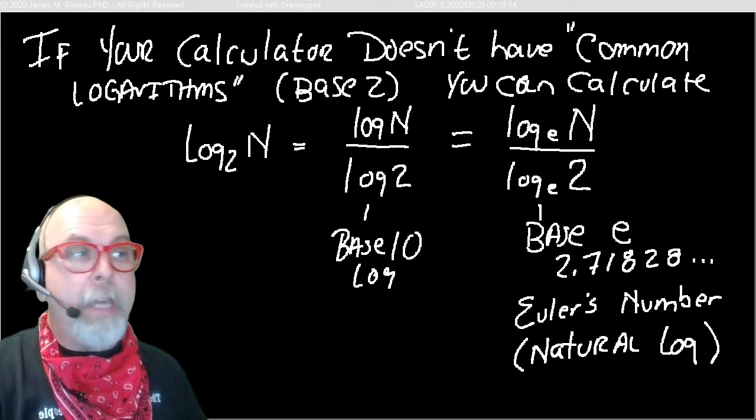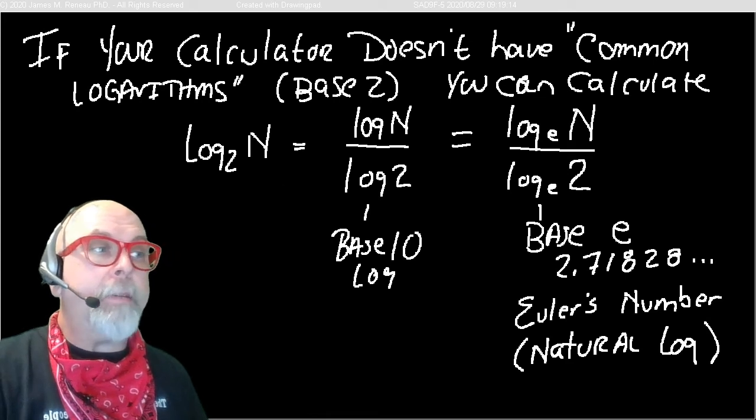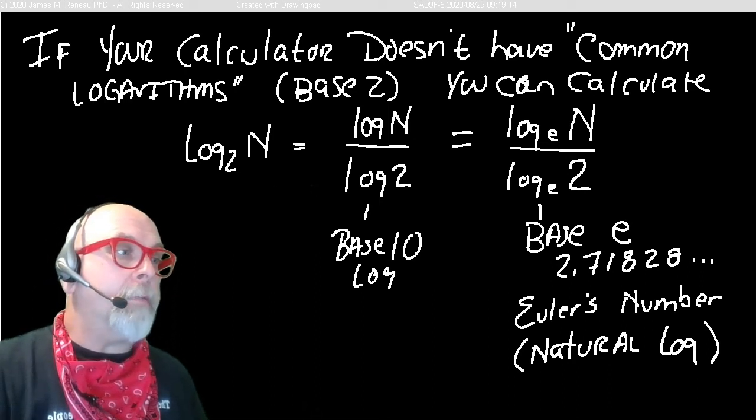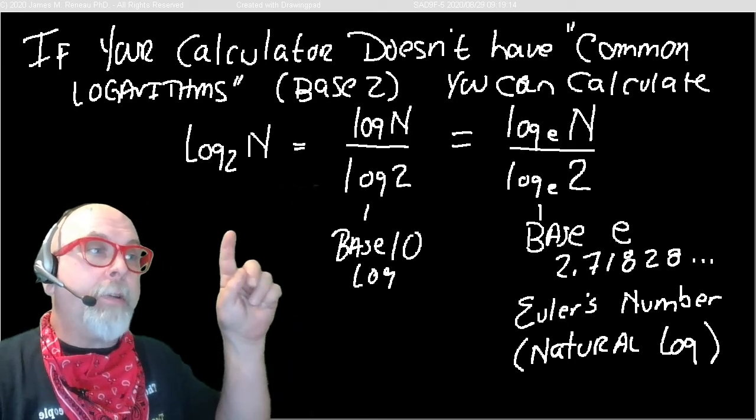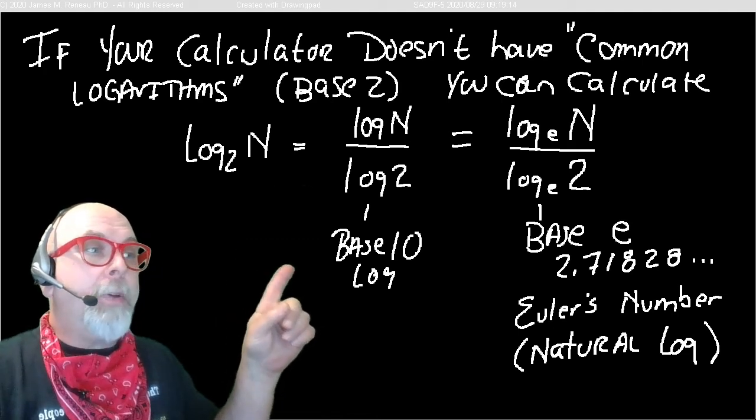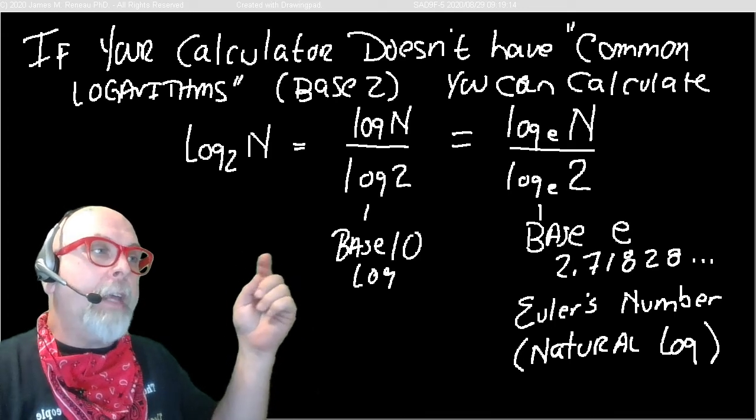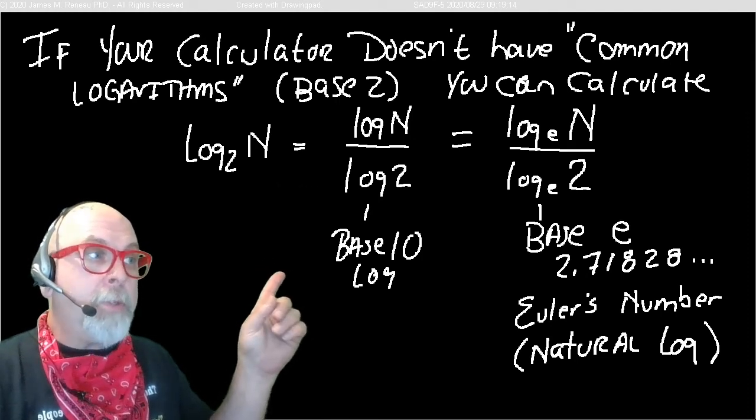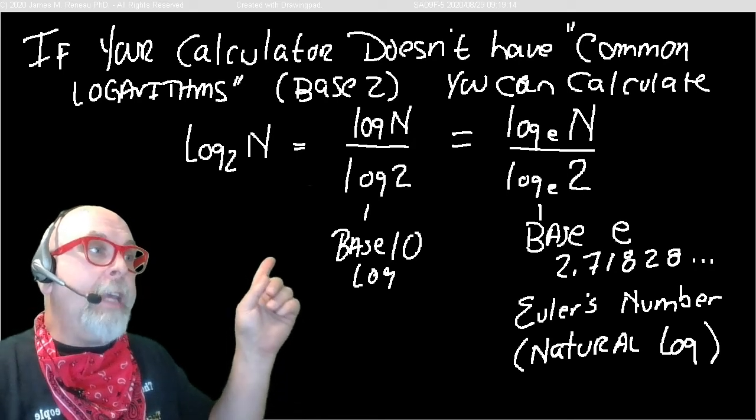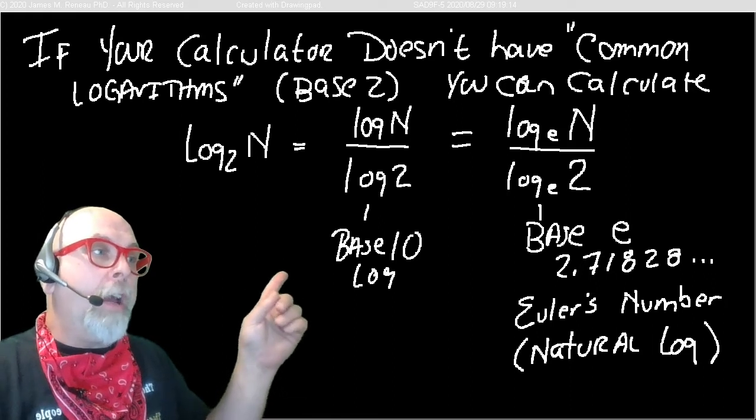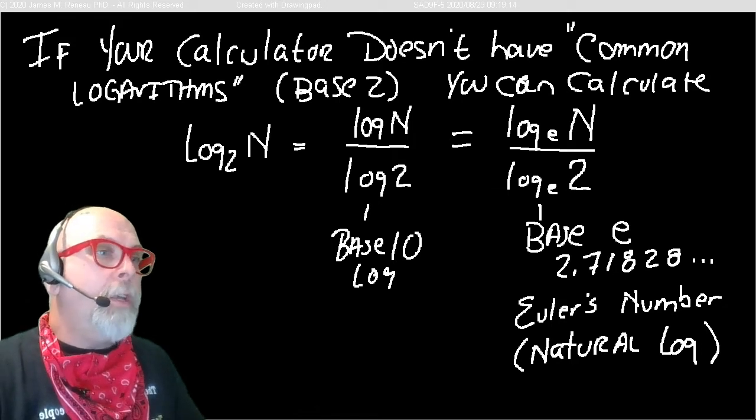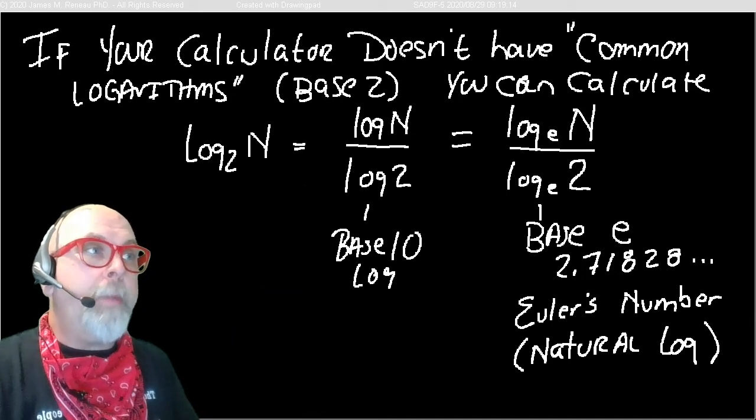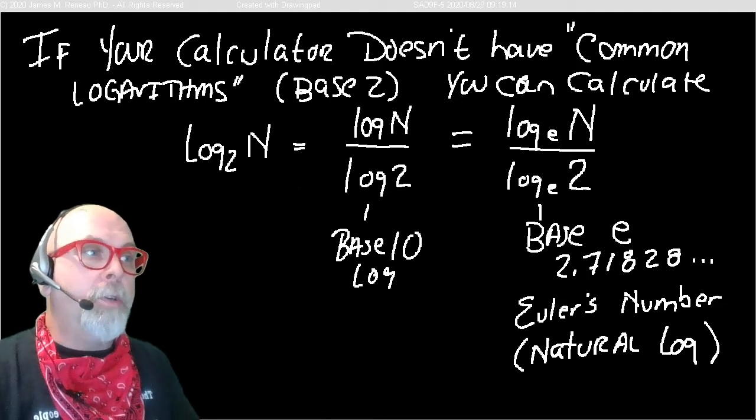A lot of our calculators, like the Windows calculator built onto Windows and formulas in Excel probably don't have the base 2 logarithm as an available option to calculate a logarithm based 2. So if your software will let you calculate a base 10 logarithm, then calculate log N divided by log 2, or if it'll let you calculate a log on the natural numbers, E, Euler's number, then you could do log N E, or log E of N divided by log E of 2, and that will give you a log 2 of N.